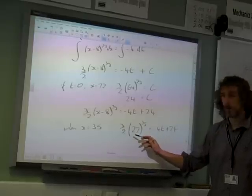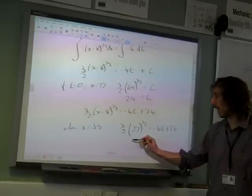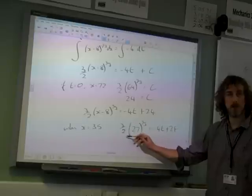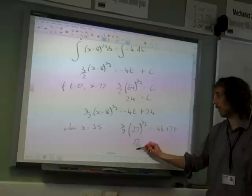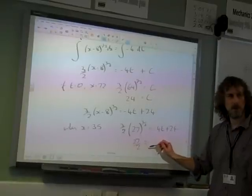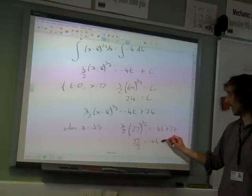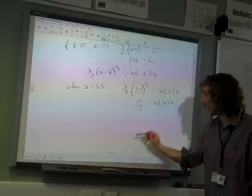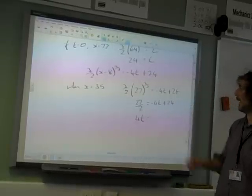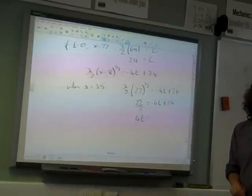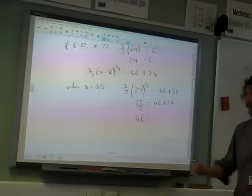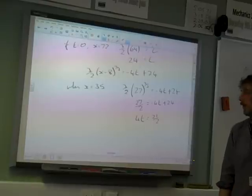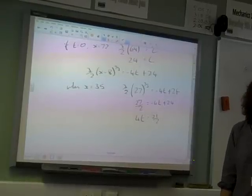27 cube rooted is 3, squared is 9, so that is 3 over 2 times 9, or 27 over 2, is that right? Is minus 4t plus 24. So 4t is 24 take 27 over 2, which would be, is that 21 over 2? I'm losing confidence that I've done that right. Have I done that right? Yes.